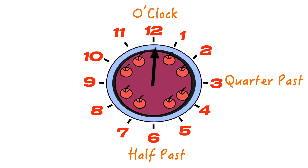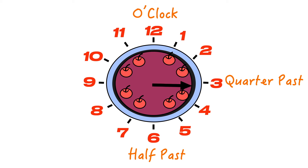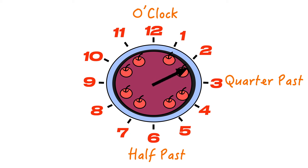Now we're going to look at what happens when our minute hand moves in a clockwise direction around to the 3. It has moved one quarter of the clock and it's on the past side of our clock. So when the minute hand is pointing to the 3, we can now call that quarter past the hour, because the minute hand has moved a quarter of the way around the clock.